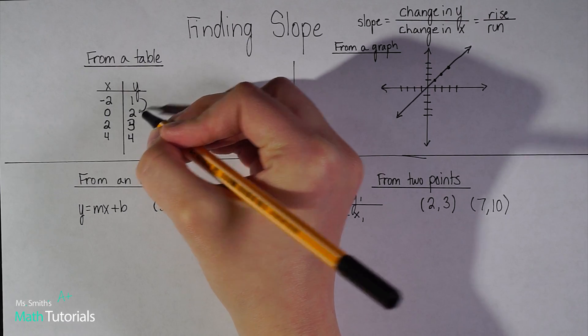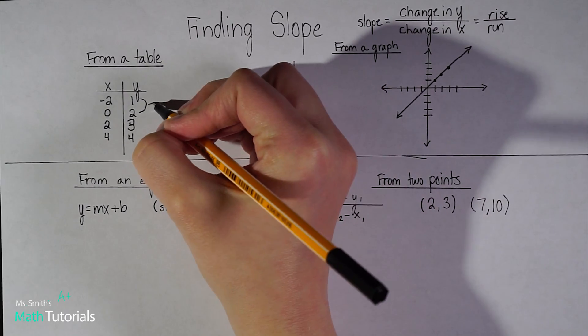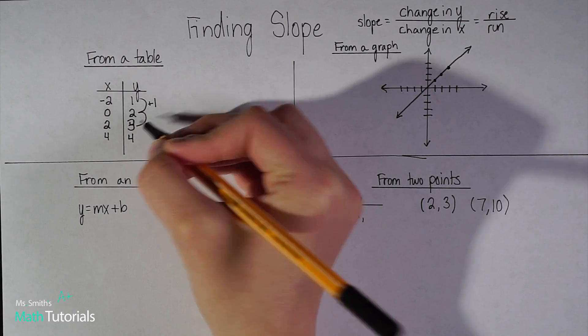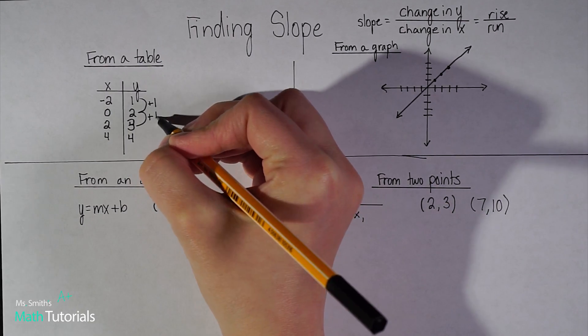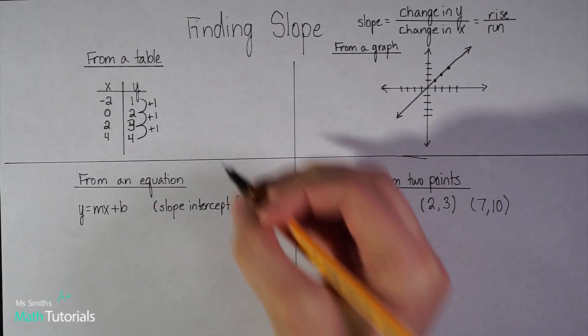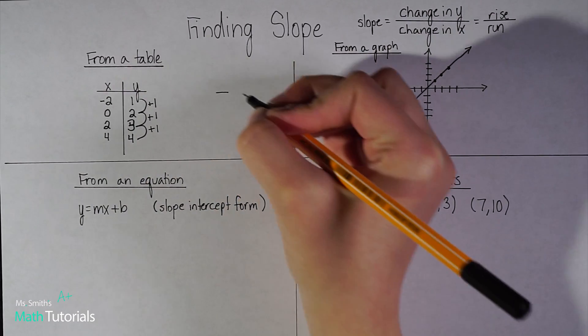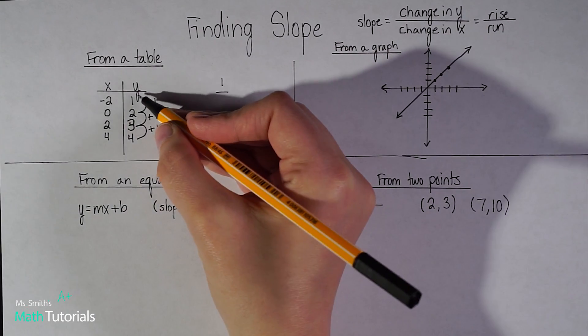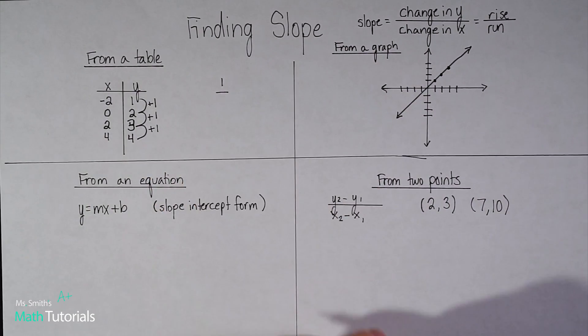For starters, we went from positive 1 to positive 2. Well, we increased 1. To go from 2 to 3, we increased 1 again. And then from 3 to 4, we increased 1 again. So I know that my numerator is going to be 1. That's my change in y, my consistent change in y.